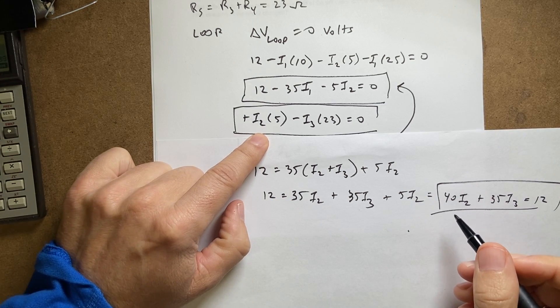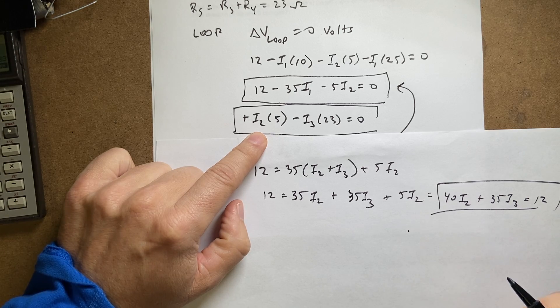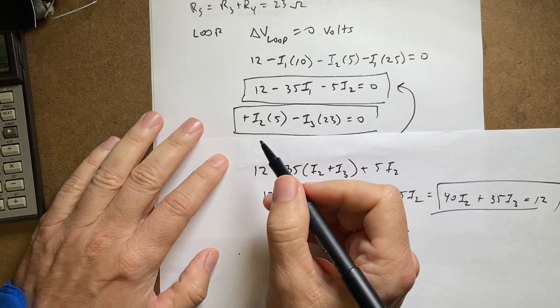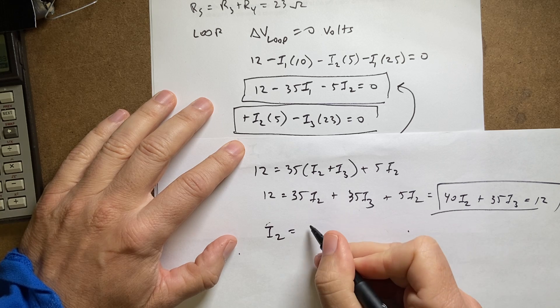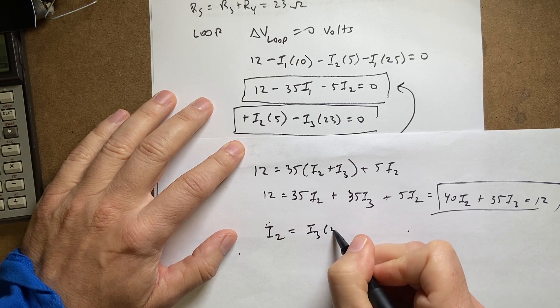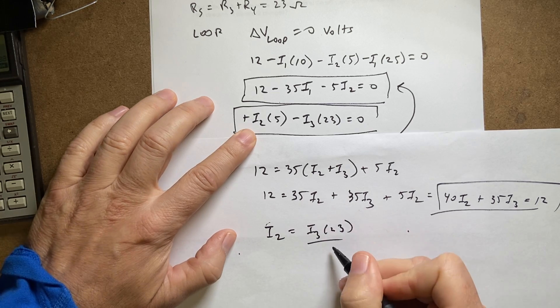Okay, now I have this other equation down here. I'm going to solve this for i2. So if I solve this for i2, I get i2 equals i3 times 23 divided by 5.